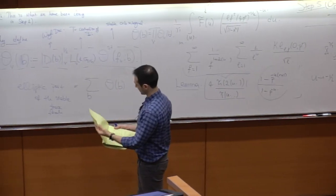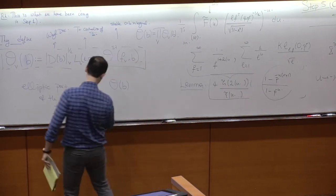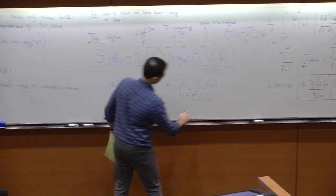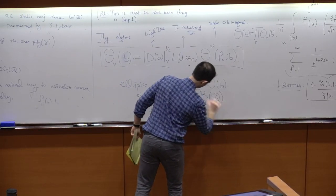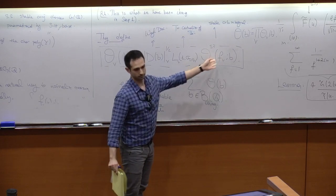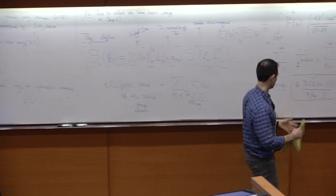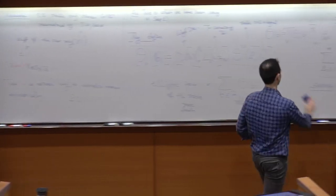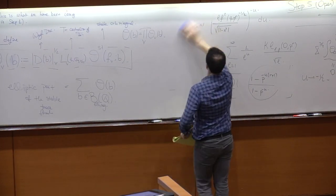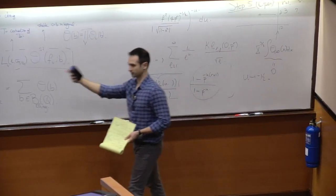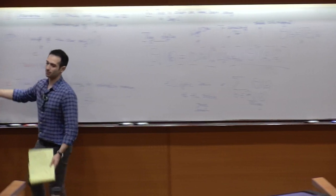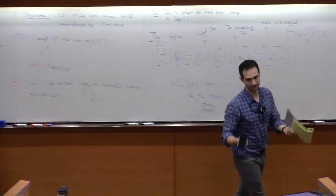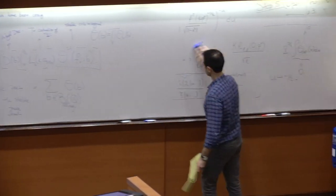So they basically write this thing down as the sum. But what are we summing over? We are summing over the Q-valued points of the base, but elliptic regular. This is not a full sum, because if it's not elliptic regular, then we need to fiddle around with the orbital integrals — they don't make sense. You need to take weighted orbital integrals. So these theta functions are not really defined in that case. The hyperbolic terms are missing — anything which is not regular elliptic is missing.